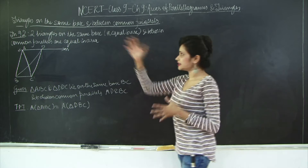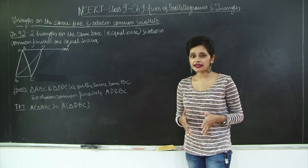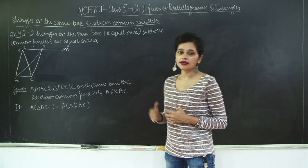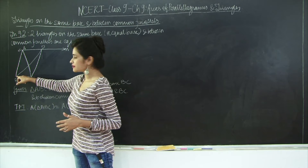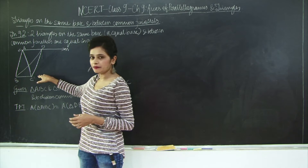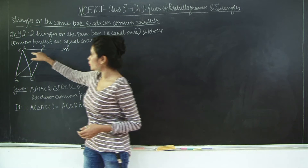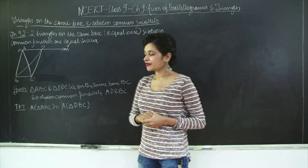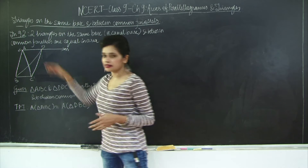For this concept we have a theorem — theorem 9.2 — which states that if two triangles lie on the same base and between the common parallels, then they are equal in area. I have drawn two triangles: triangle ABC and triangle DBC on the same base BC and between the same parallels BC and line M, with points A and D on line M. I need to prove that area of triangle ABC is equal to area of triangle DBC.